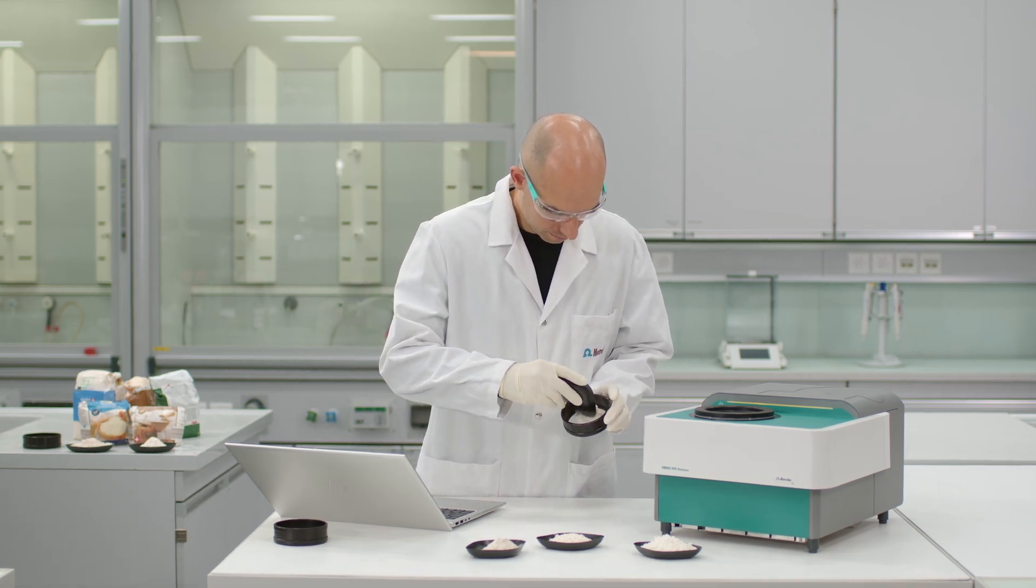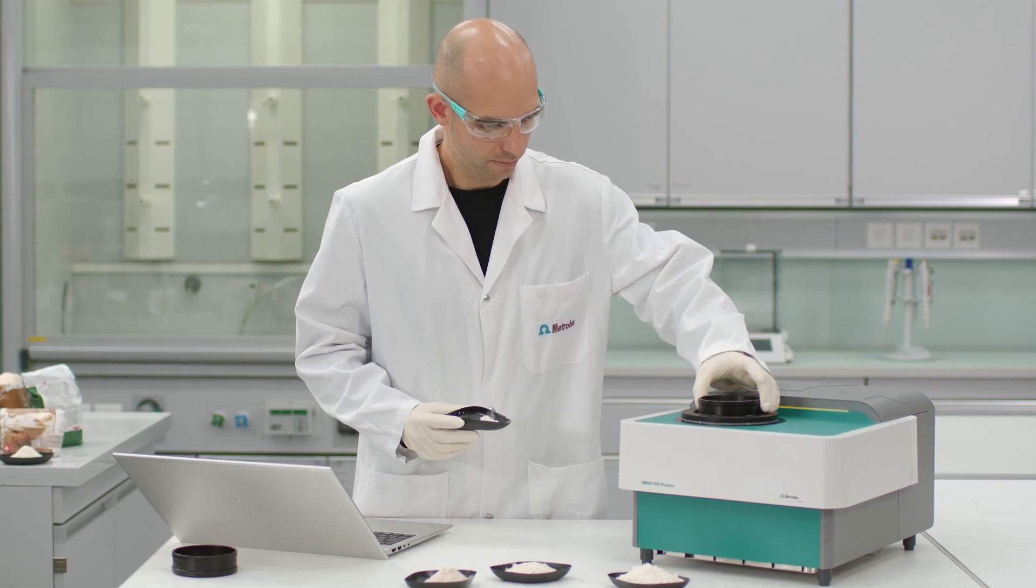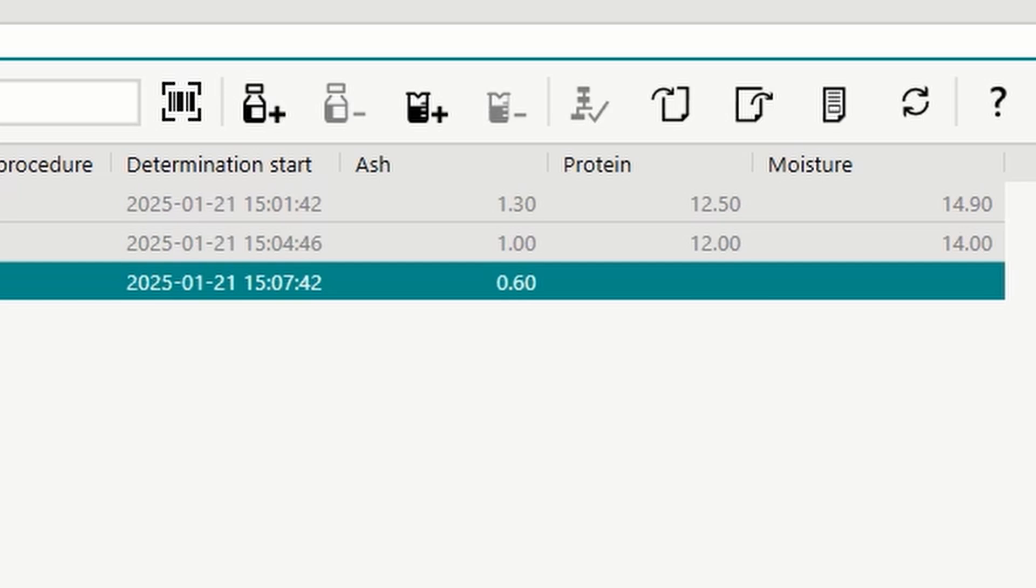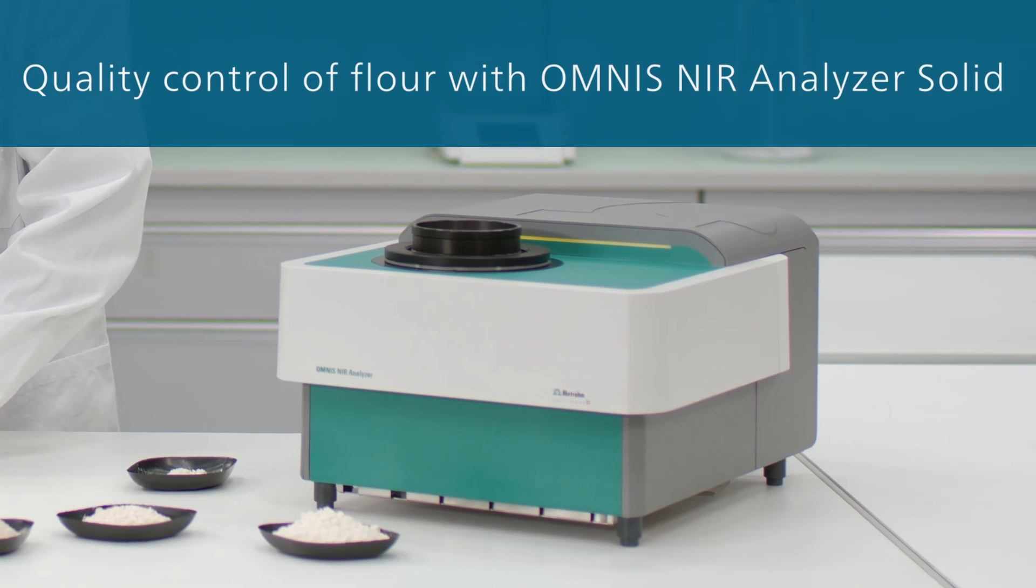It's so fast! Fill the cup with flour, place it on the Omnis near analyzer solid, start the measurement. Get your ash, protein and moisture content in seconds with the Omnis near analyzer solid from Metrum.